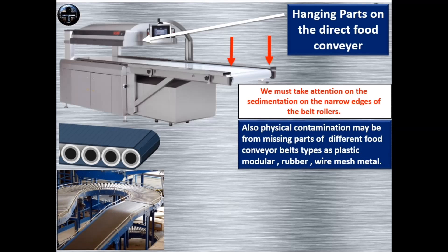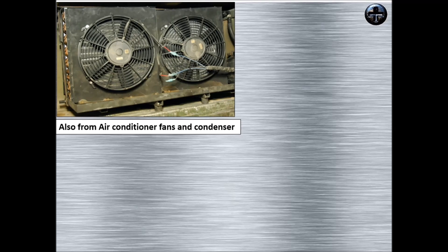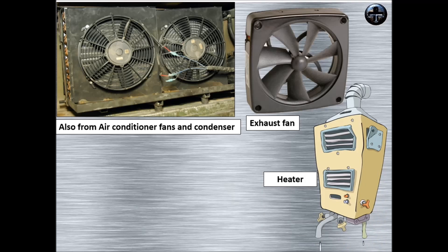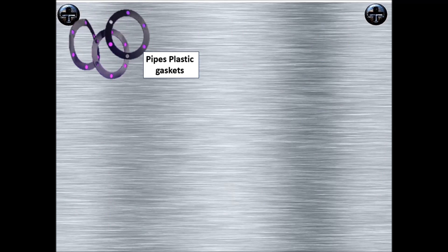Also from the missing parts of different food conveyors, because there are many different types of food conveyors like plastic modular, rubber, wire mesh, and metal. Physical contamination from machines may also come from air conditioner fans and their condensers, exhaust fans, heaters in bad or poor condition, and from fire systems — whether fixed or mobile parts. Also from machine parts like pipes, plastic gaskets, or any gaskets with missing parts, which may cause very critical physical contamination.